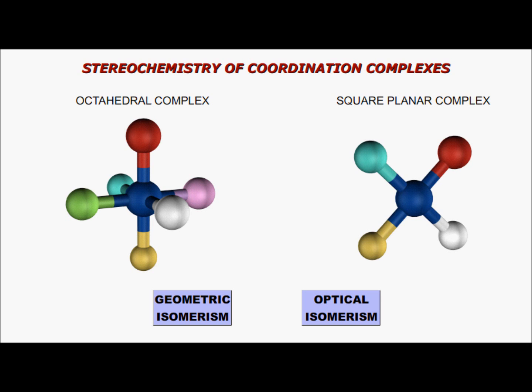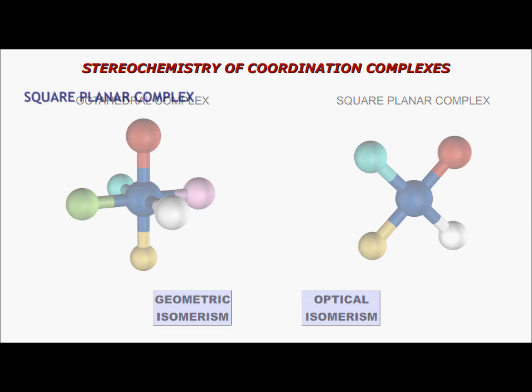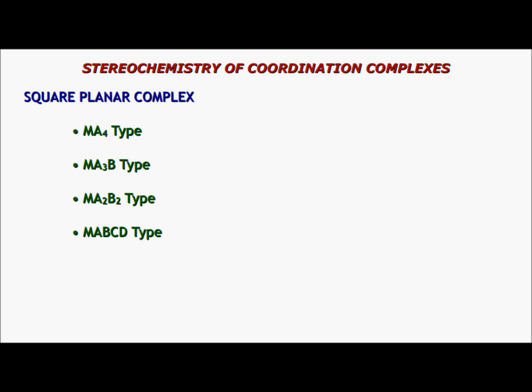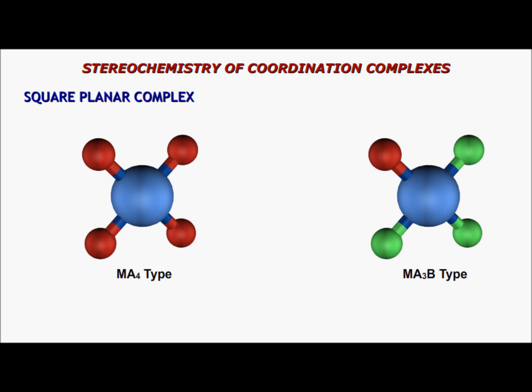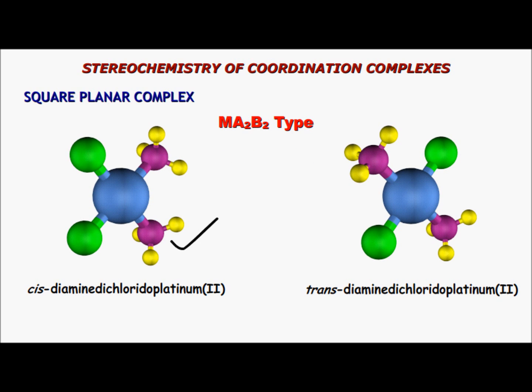Square planar compounds do not show optical isomerism because there is always a plane of symmetry. There are four types of square planar complexes, two of which have no geometric isomers. The MA2B2 type — for example, diamine dichlorido platinum(II) — has two geometric isomers: the cis isomer, where similar ligands are adjacent, and the trans isomer, where similar ligands are on the opposite sides of the central metal atom.